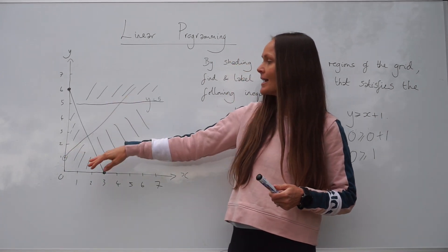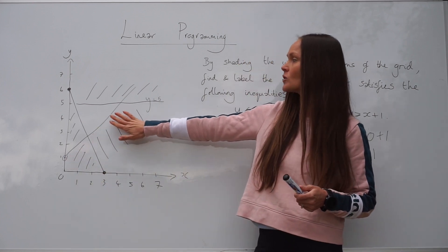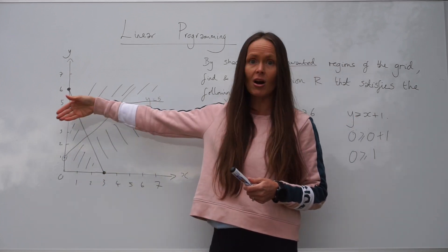If that had worked, and the inequality was correct, you would need that side of the graph, so you would have shaded above the graph instead.